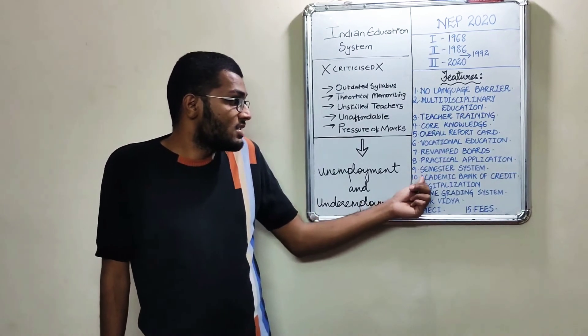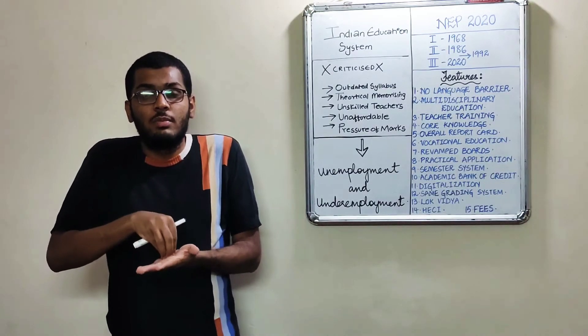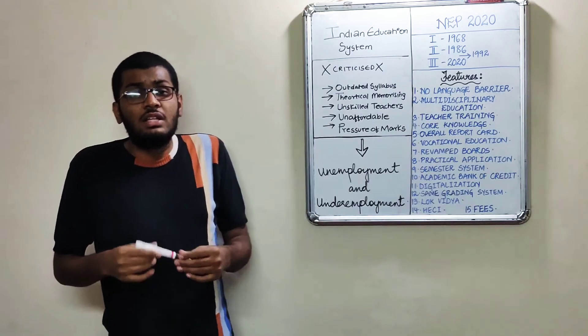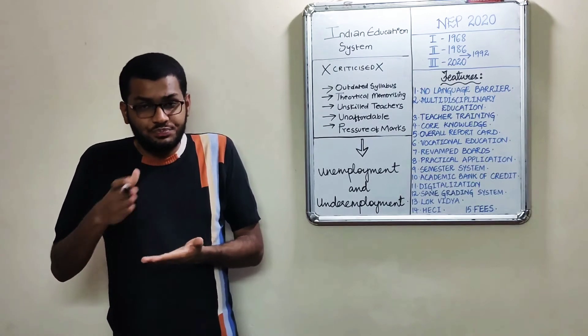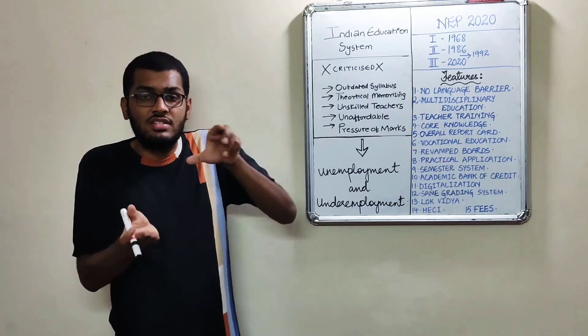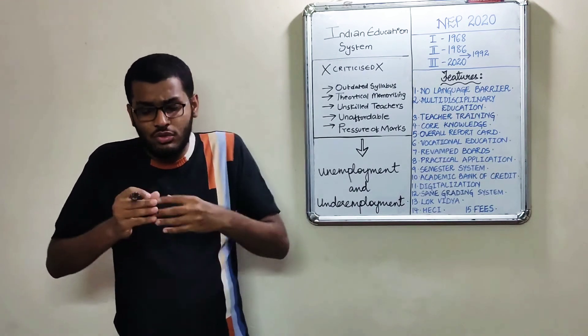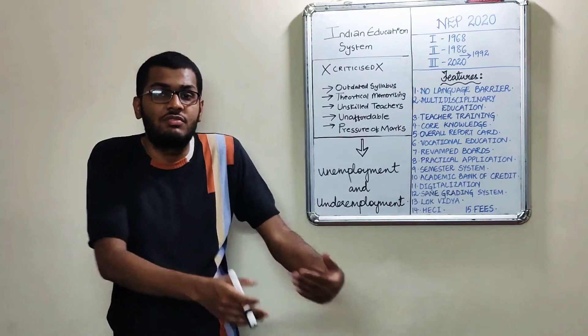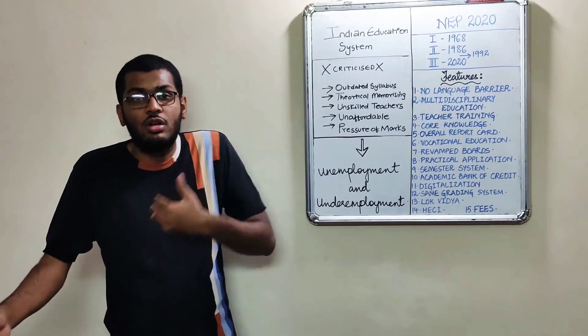Number nine is semester system. There is a plan to implement semester system in schooling, so that from the first you are divided - every year will be divided into 6-6 month terms. So you study a little, give exams, and shift to the next, rather than carrying one year's full load.